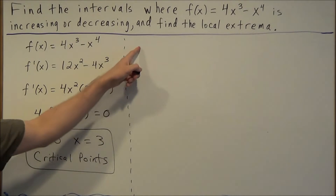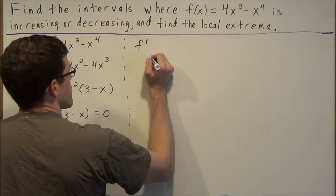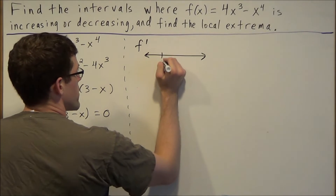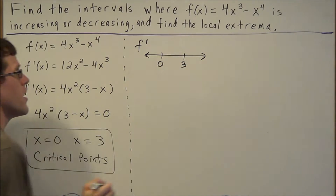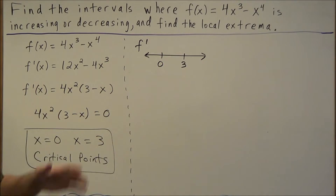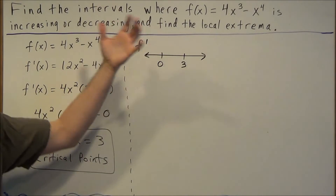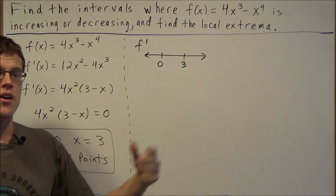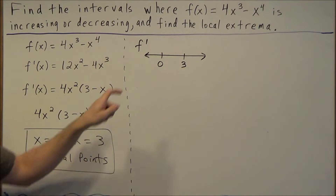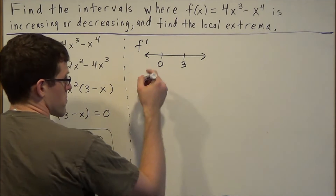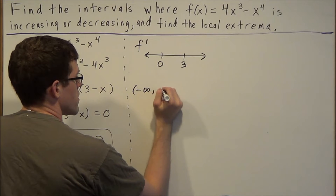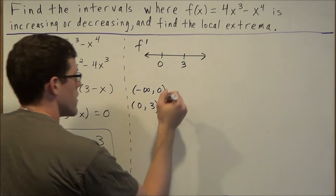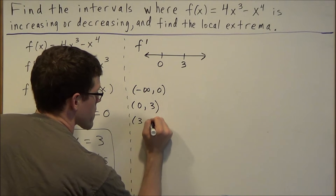For the next stage we're going to make a sign chart for the first derivative. We mark the critical points zero and three on the number line, which creates three intervals: from negative infinity to zero, from zero to three, and from three to infinity.